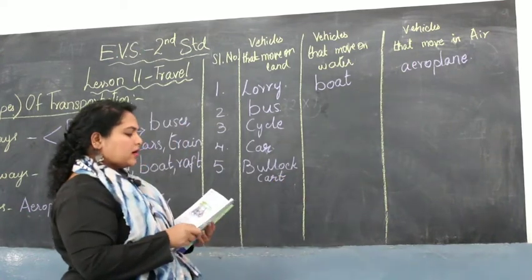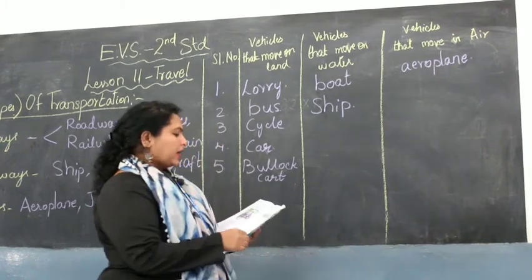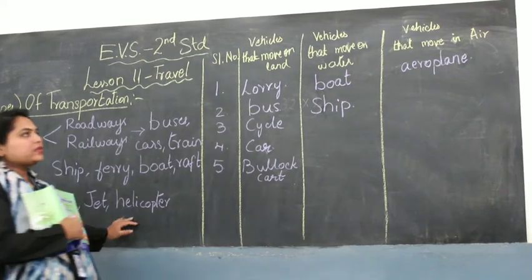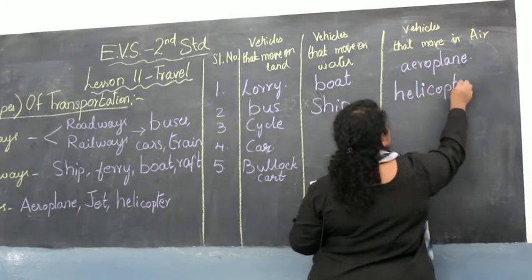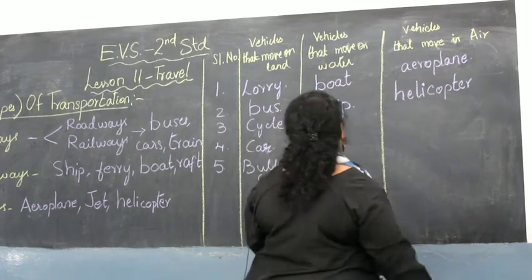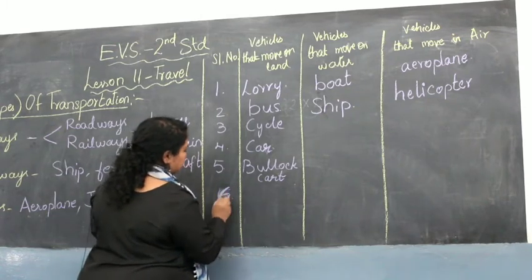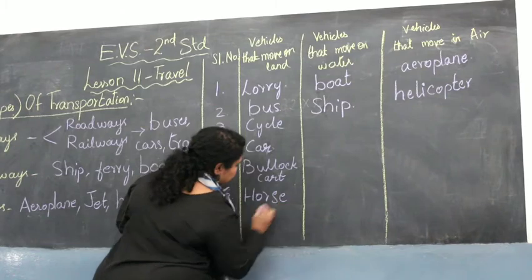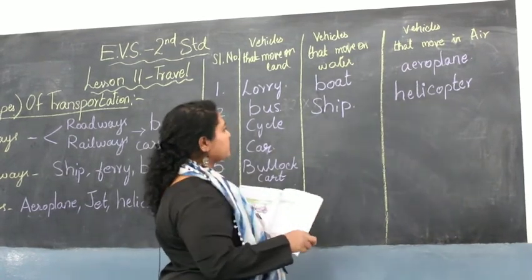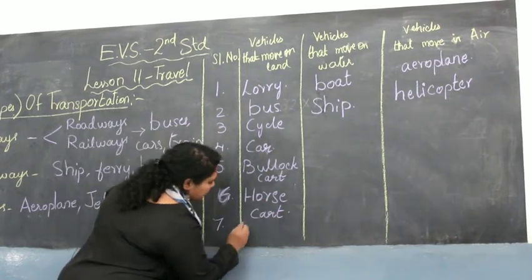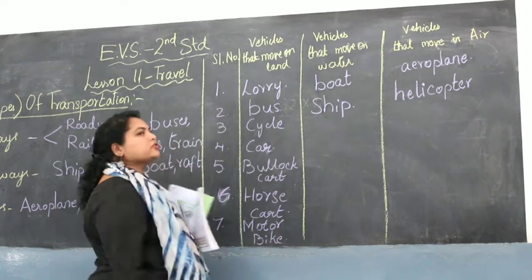Bullock cart again moves on land. Ship moves on water. Helicopter is another example of airways — helicopter moves in air. Horse cart is a vehicle which moves on land. Motorbike is another example of landways — motorbike is a land vehicle.